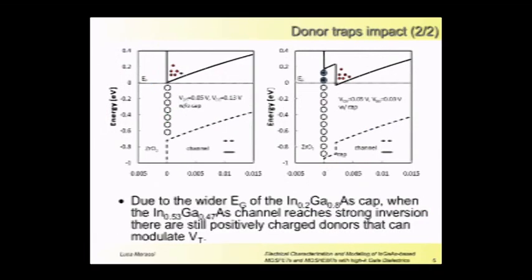This phenomenon is represented in this simple scheme that shows us the band model of the devices. When looking at the device with cap, due to the wider band gap of the capping layer, the channel is near inversion condition. Some donors - the donors above the Fermi level - are still positively charged. When we move to the other device, all the donors are below the Fermi level and they are completely neutralized and cannot impact the threshold anymore.